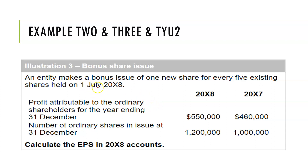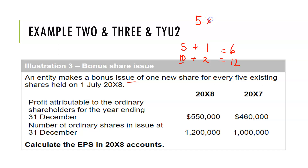An agency makes a bonus issue of one new share for every five. So if you have five shares, you get an extra one — now you have six. We use a bonus fraction to work out the new number of shares: multiply by six over five. So if you had 10 shares and multiply by 6/5, you now have 12.